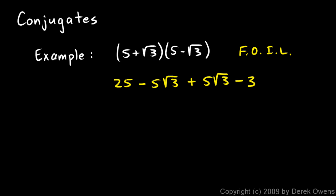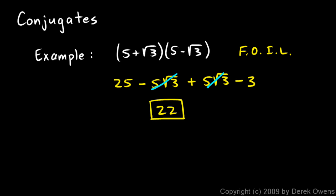Now notice something that happens here. This minus 5 root 3 and the plus 5 root 3 cancel out, and I'm just left with 25 minus 3, which is 22. And 22 is the answer. The thing to take note of is that there are no radicals in that answer. When I multiply these two particular binomials, the radicals entirely cancel out, leaving me with simply a rational number.